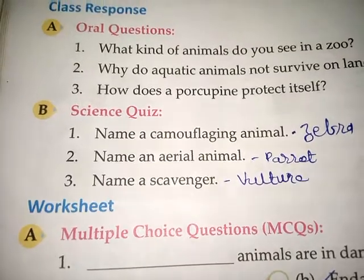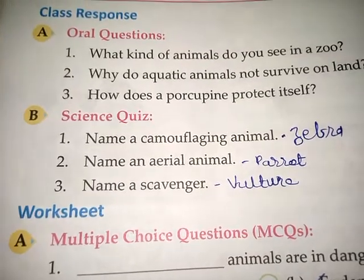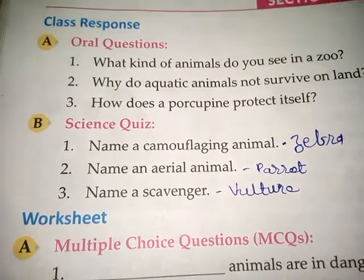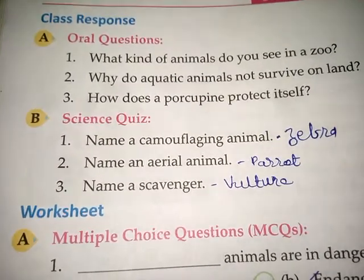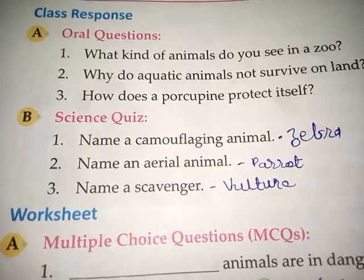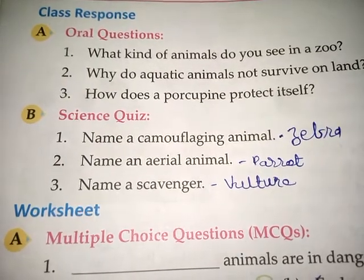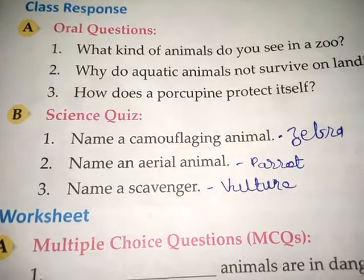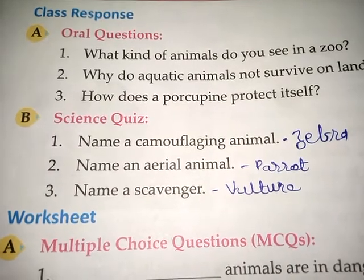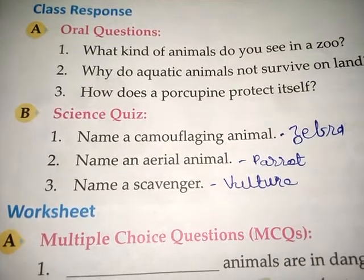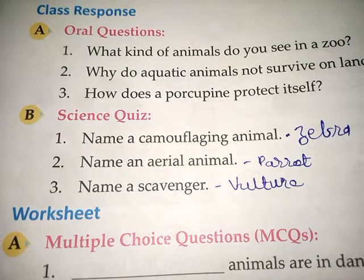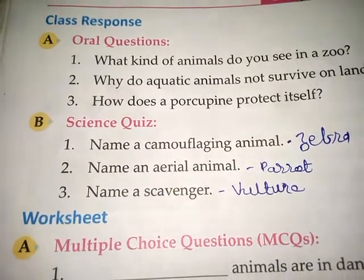B Number, Science Quiz. First: Name a camouflaging animal. Answer is zebra. Second: Name an arboreal animal. Answer is parrot. Third: Name a scavenger. Answer is vulture.